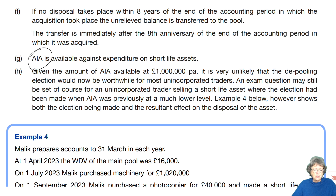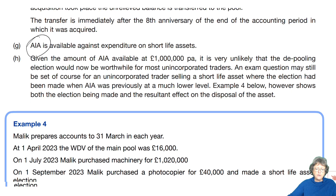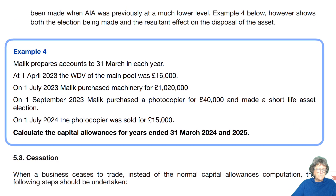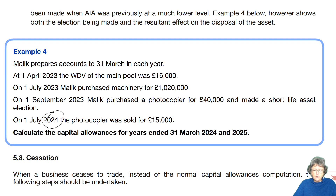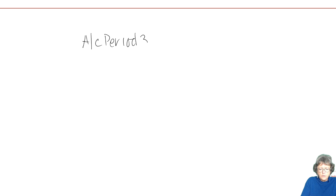An example below shows both the election being made and the resultant effect on disposal. Malik prepares accounts to the 31st of March each year. At the 1st of April the written down value on the pool was £16,000. In July he bought plant and machinery worth £1,020,000. He also bought a photocopier, made it a short-life asset, and the copier was later sold. We're going to look at the capital allowances for two years — the year to March 2024 and the year to March 2025.